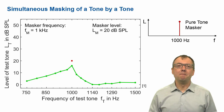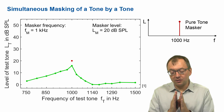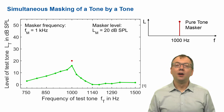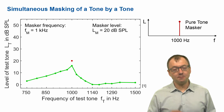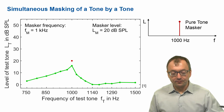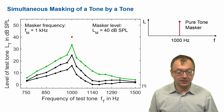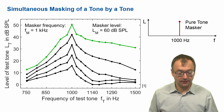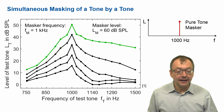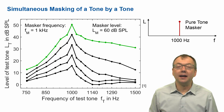We've already seen that the masking of a narrow band of noise is specific and more strongly close to the center frequency of the noise. Similar effects occur when a tone is a masker and it's masking another tone. Here we see the masking pattern for a tone of low level where we slowly increase the level of the masker, and you see that the masking pattern changes. Masking is most strongly near the center frequency of the tone and decays towards higher and lower frequencies.